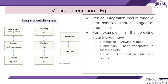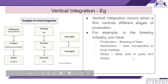Let us look at an example of vertical integration. Vertical integration occurs when a firm controls different stages of production. For example, in the brewing industry, you have production — the brewing of beer — then distribution, where beer is transported to local markets, and retail, where beer is sold in pubs and shops.